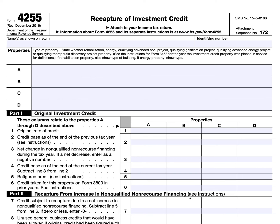We'll be going over IRS Form 4255, Recapture of Investment Credit. Taxpayers use this tax form to figure the increase in tax if they're recapturing an investment credit that was previously claimed, or for recapturing a qualifying therapeutic discovery project grant.